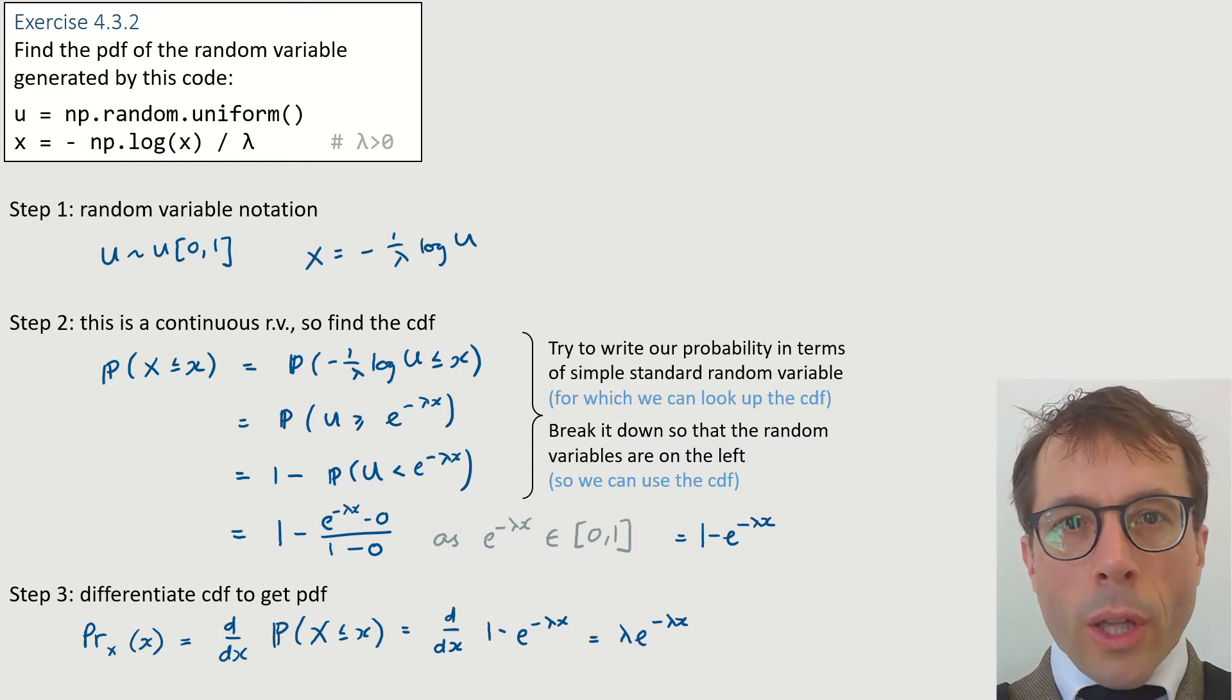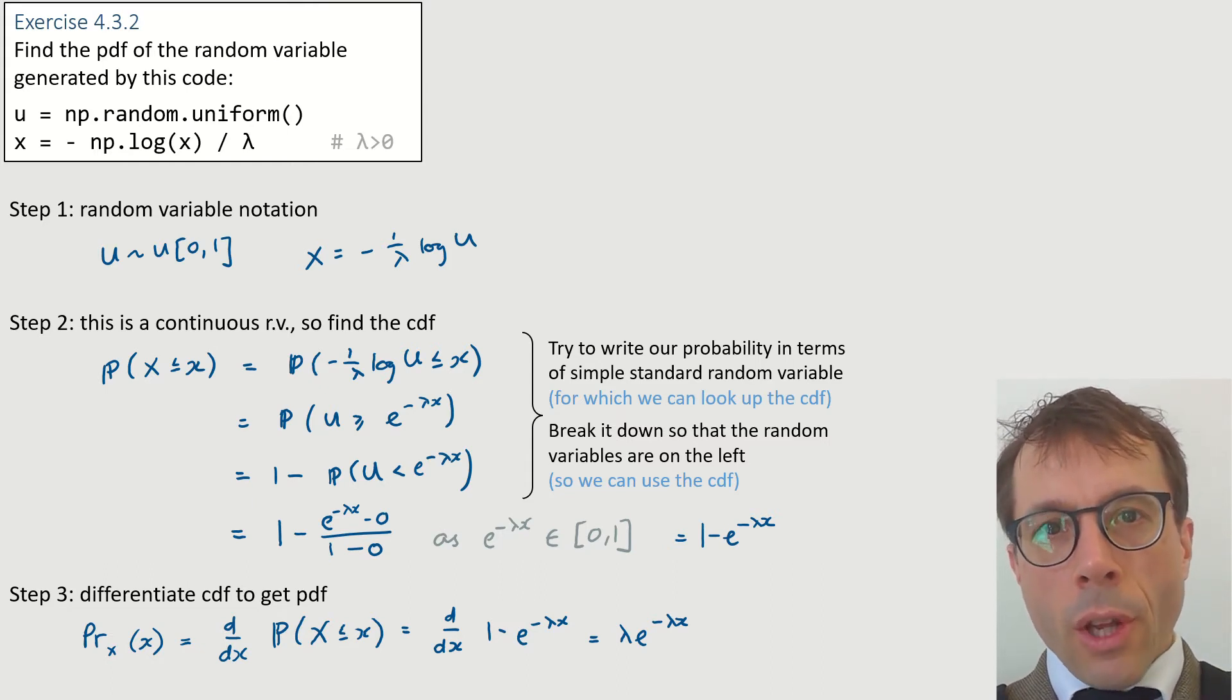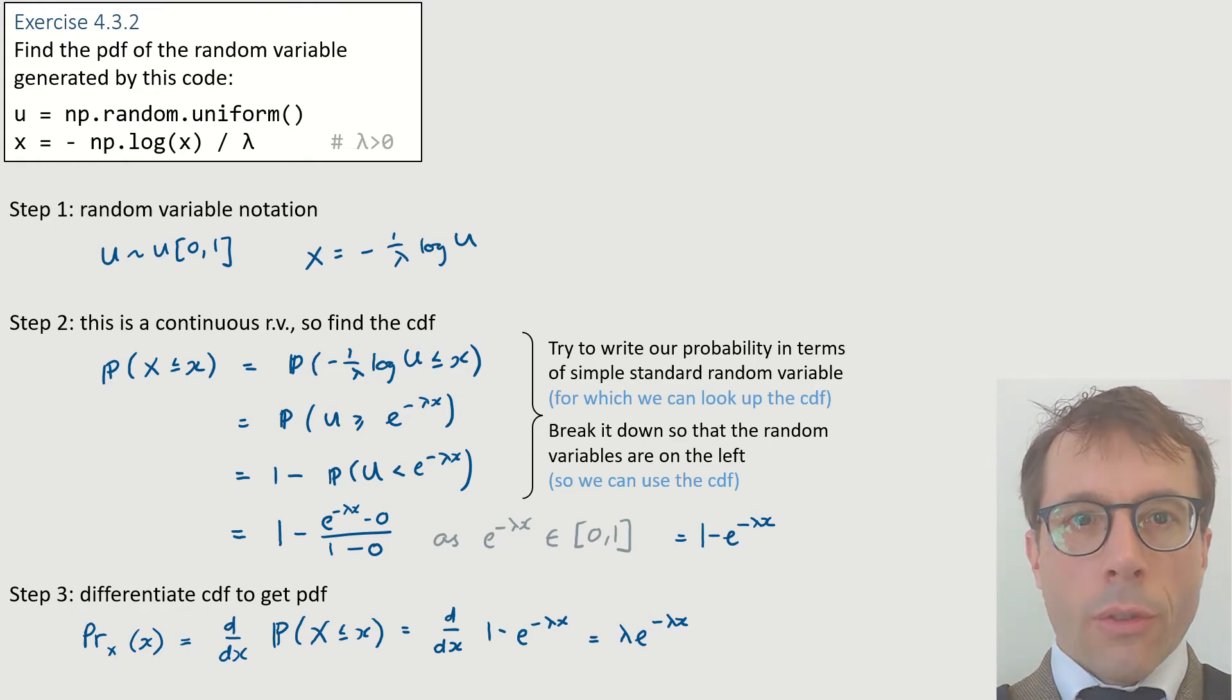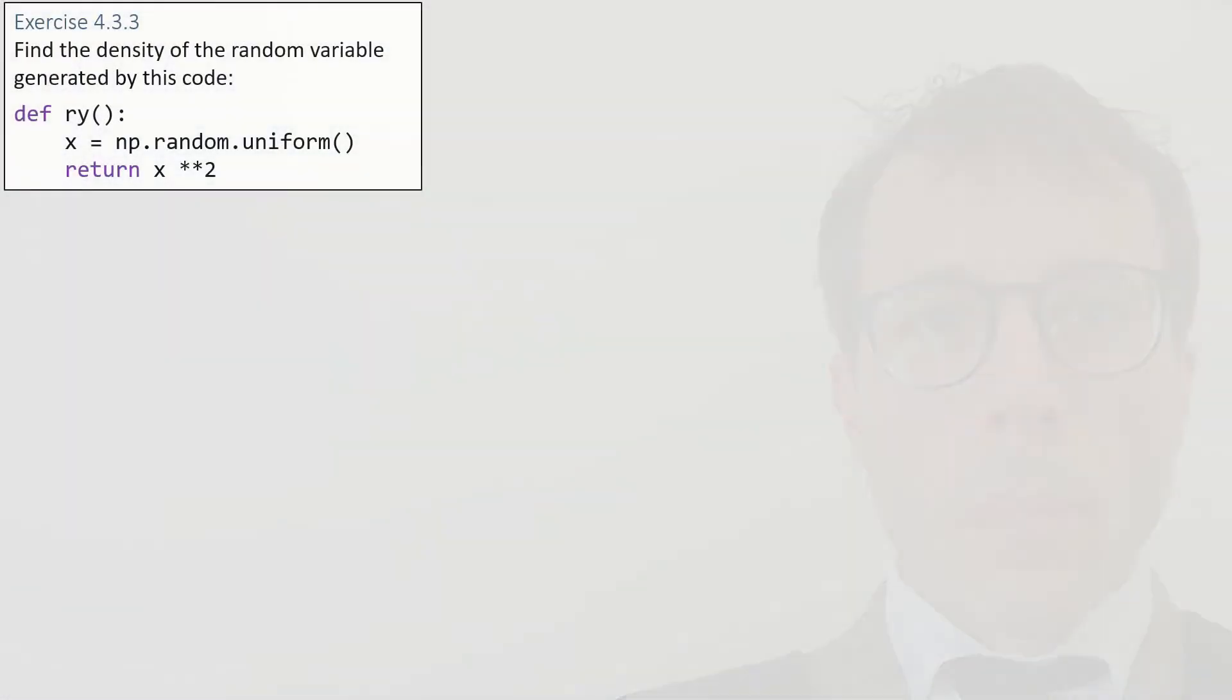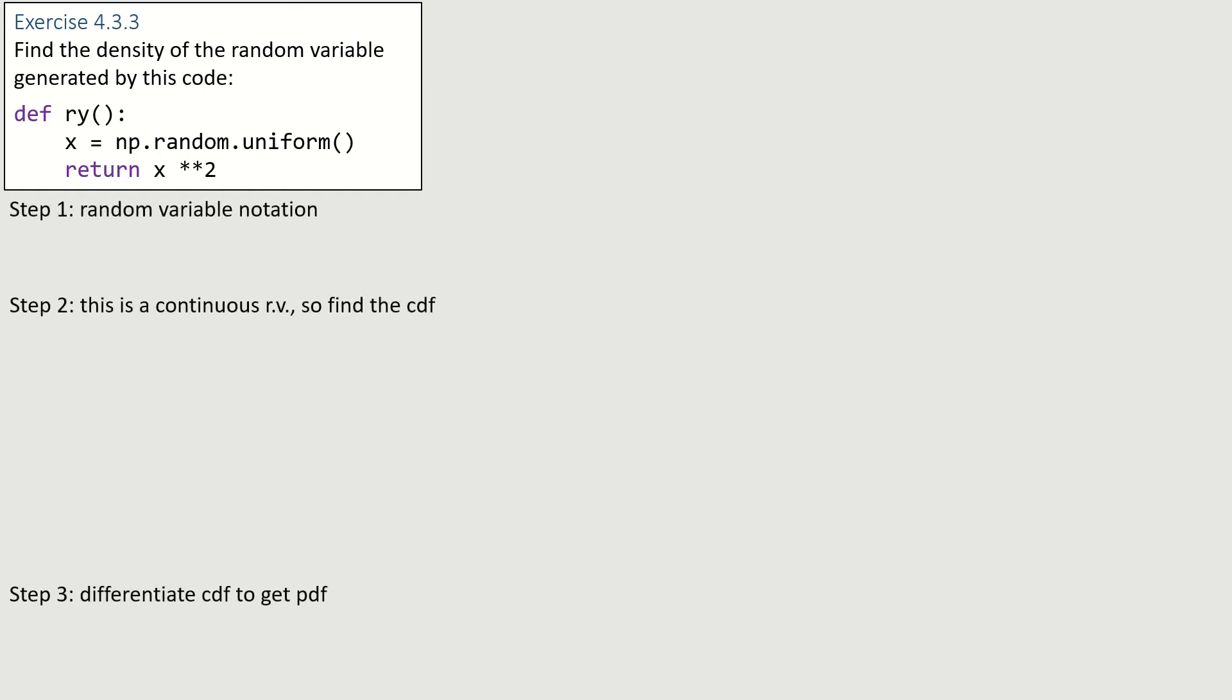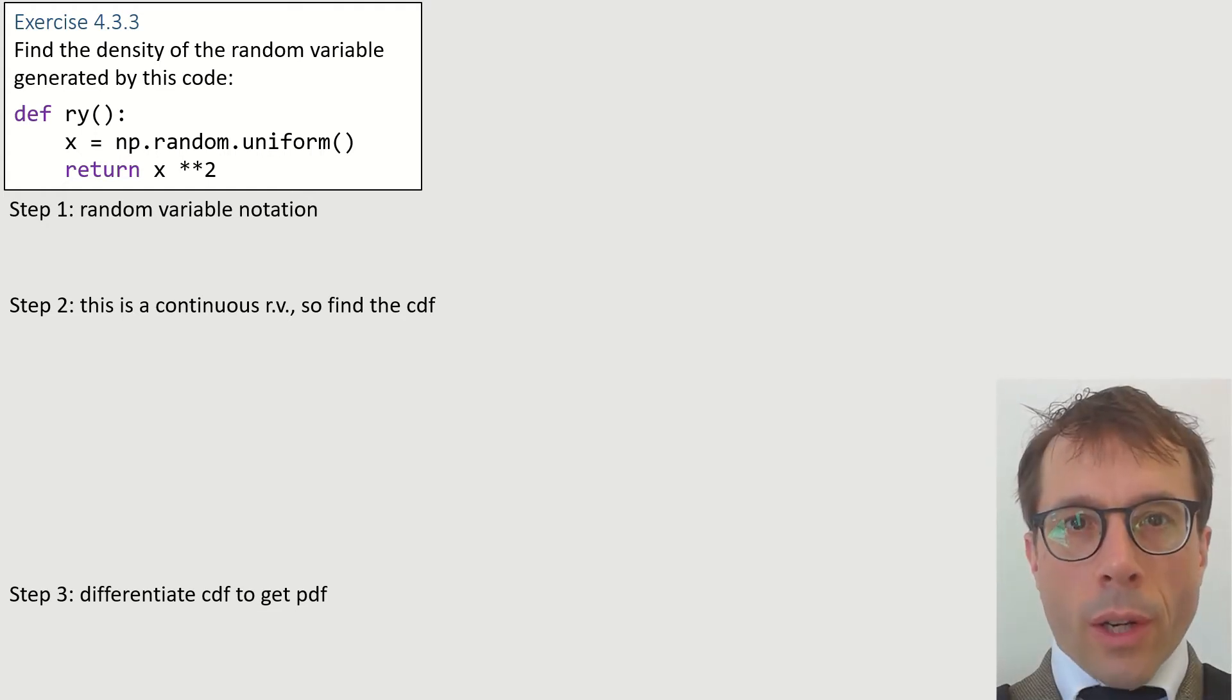Often for step two, we'll have to rely on the basic rules of probability, things like independence, the law of total probability, and so on. Okay, let's try another example. Have a read. We'll go through the usual three steps. First, write it out in random variable notation.